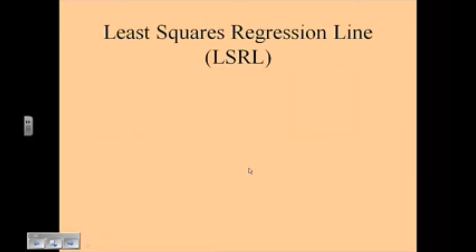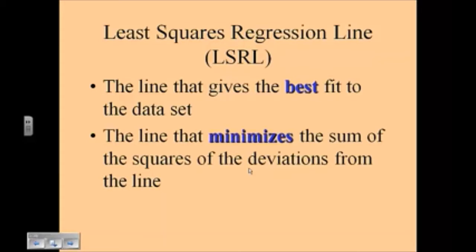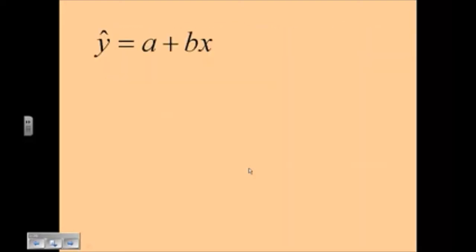The least squares regression line, we refer to this as an LSRL. It is the line that gives the best fit to the data set. It is also the line that minimizes the sum of the squares of the deviations from the line. Now that sounds kind of complicated, the sum of the squares of the deviations from the line, and I'm going to show you a picture in a minute that explains that a little bit better.